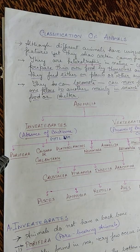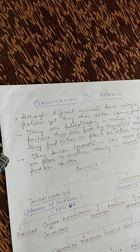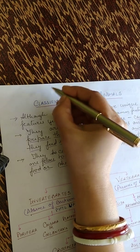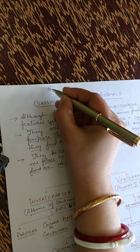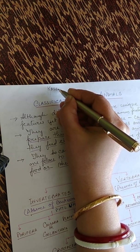This is Kasturi De speaking on classification of animals, according to the ICC syllabus for Class 7.